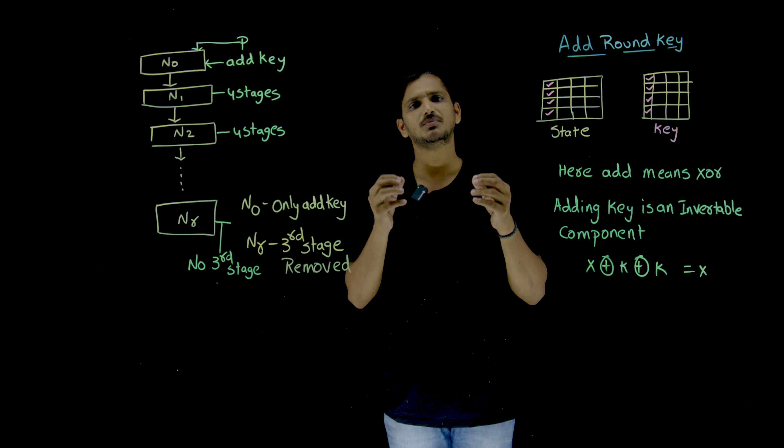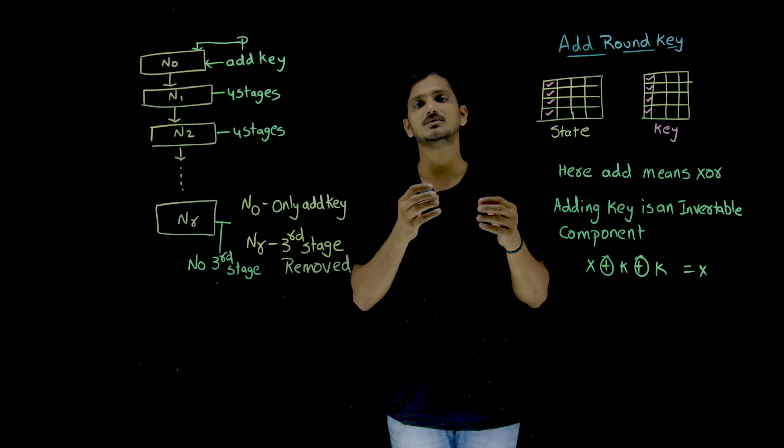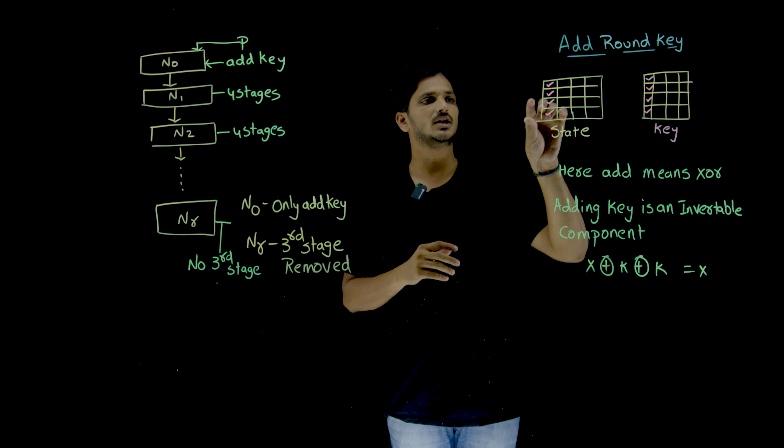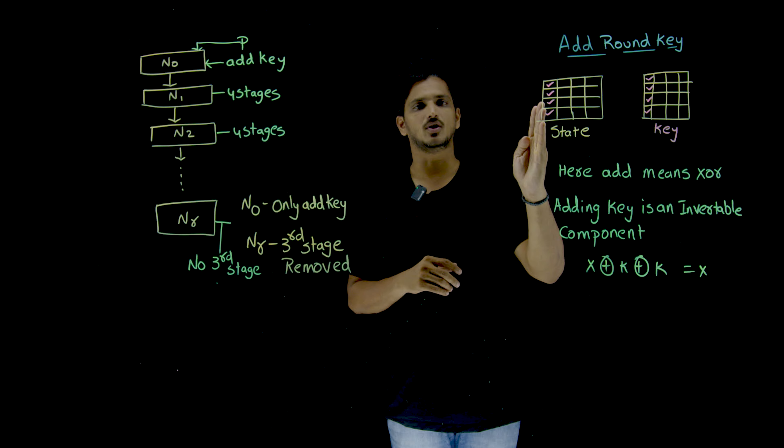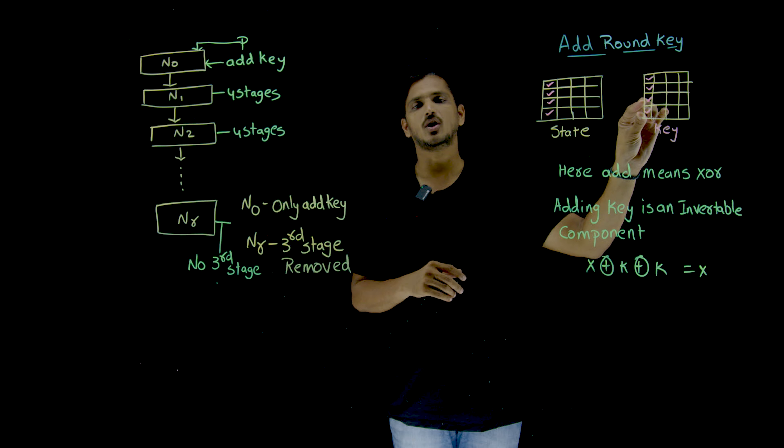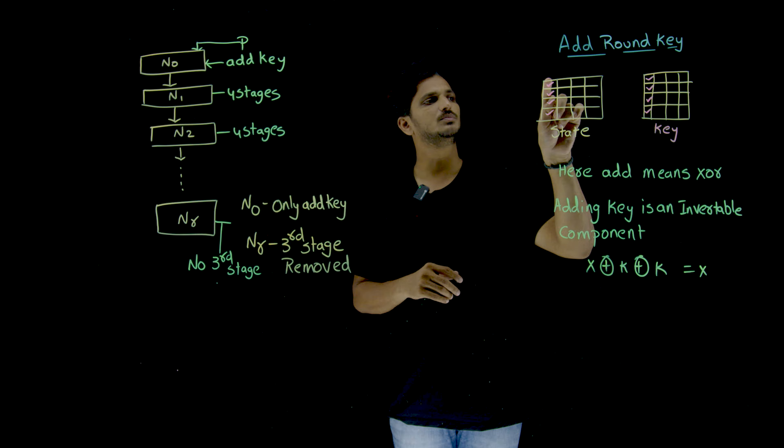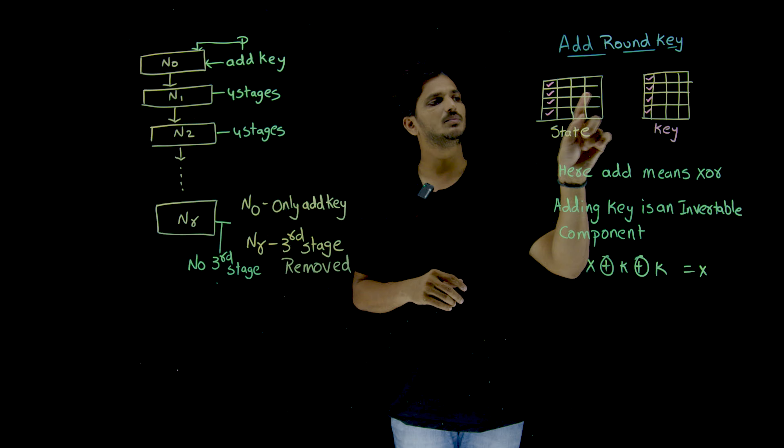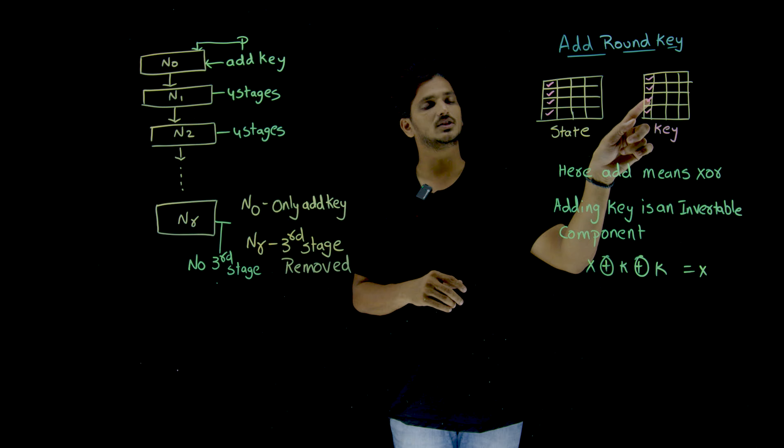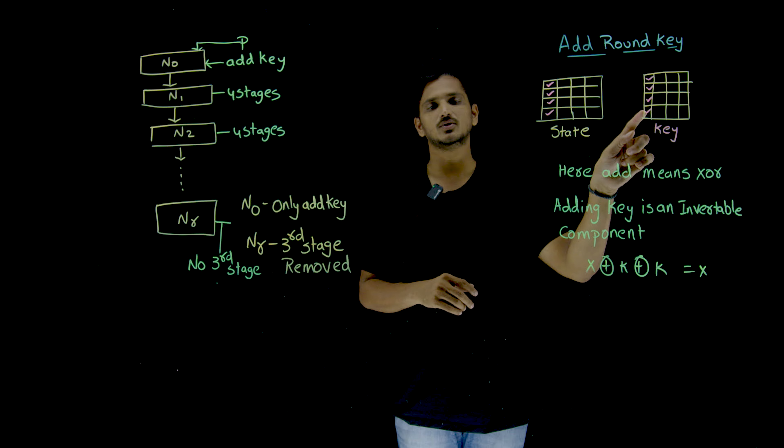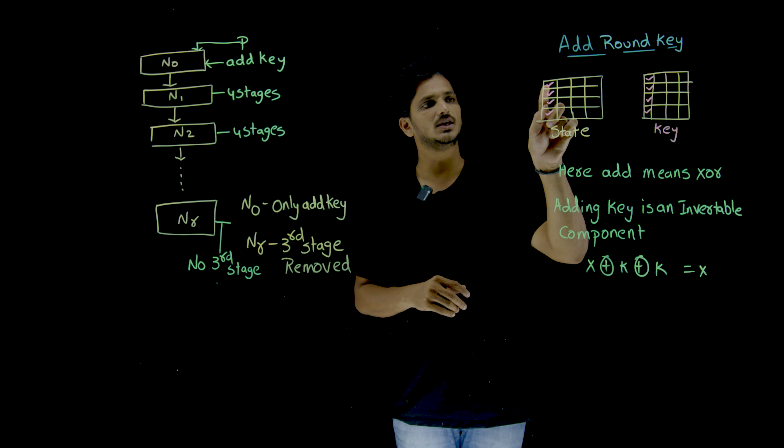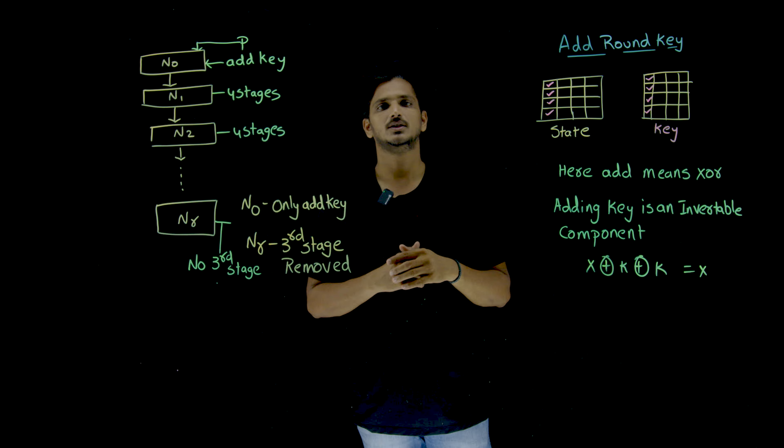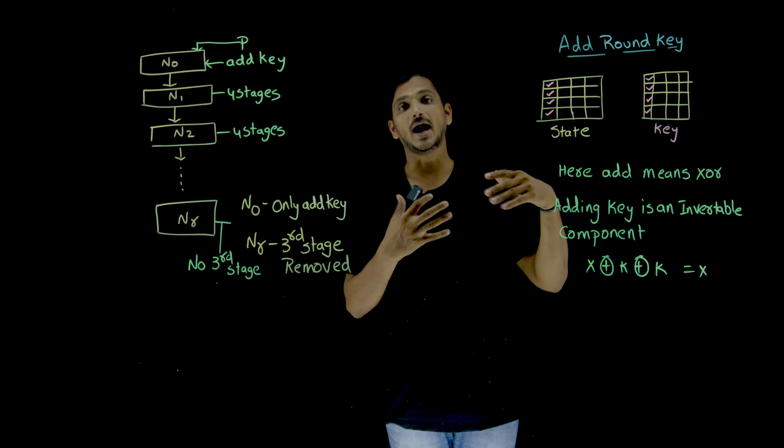This is just simple as adding key means matrix addition. So in other way, they will say that take the first column, this is first column and add it to the first column in the key. Means the first bit is added to the first bit, second bit is added to the second bit, third byte is added to the third byte, fourth byte is added to the fourth byte. Because here we are having bytes as input. This is what happened here in adding the key.